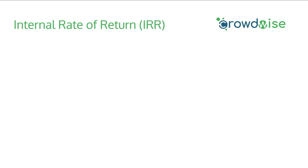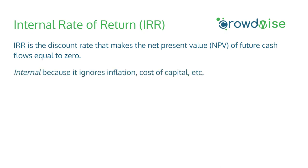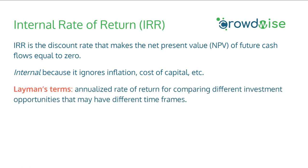Now IRR is a little more complicated. The formal definition of internal rate of return or IRR is that it is the discount rate that makes the net present value or NPV of future cash flows equal to zero. The 'internal' portion of that name comes from the fact that it ignores external factors such as inflation, cost of capital, etc. In layman's terms, IRR is essentially the annualized rate of return for comparing different investment opportunities side by side, which may have different timeframes — giving you a better apples-to-apples comparison.